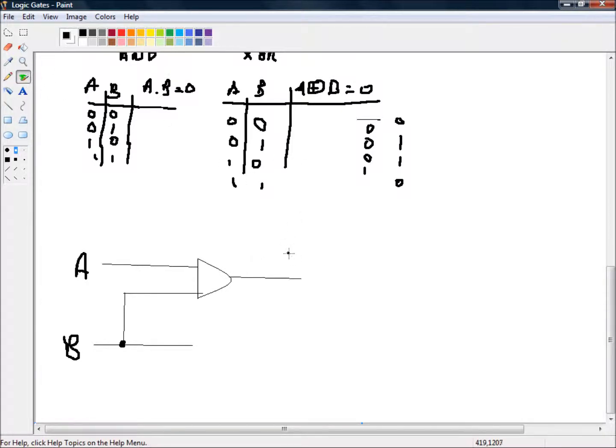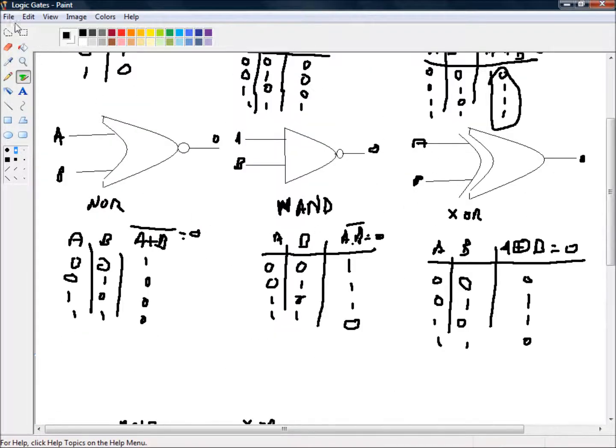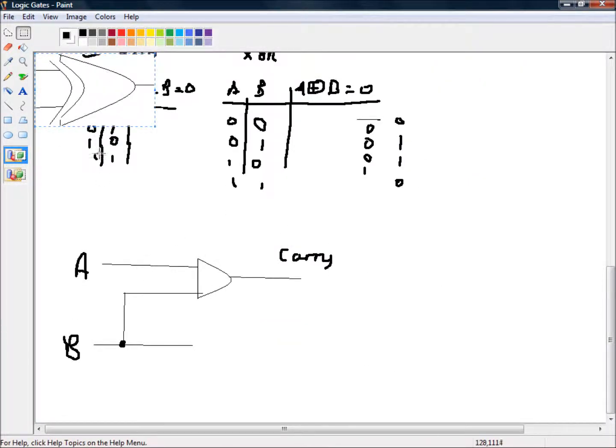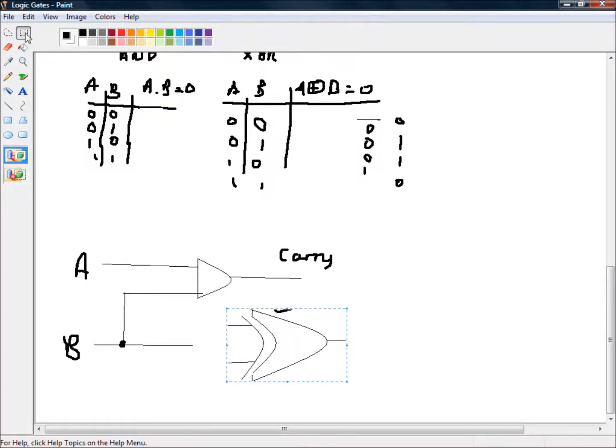So this would be our carry. This is our overflow. This is our 1 in the next column. And if we use our exclusive OR gate, and that is quite complicated to draw.